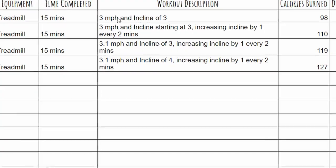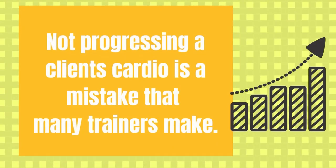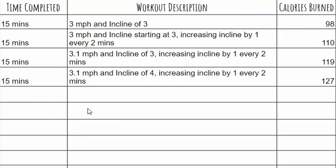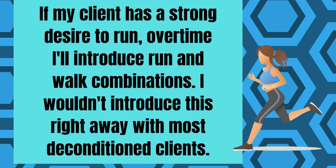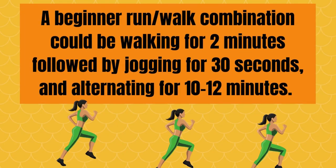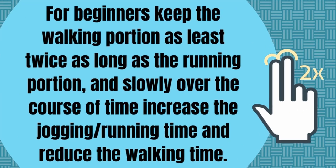Not progressing a client's cardio is a mistake many trainers make. Over time, I increase the difficulty — raising the speed a little one week, then increasing the initial incline the next. Challenge your client and keep it as interesting as you can. If a client has a strong desire to run, I'll introduce run-walk combinations over time — though I wouldn't introduce this right away with most deconditioned clients. A beginner run-walk combination could be walking for two minutes followed by jogging for 30 seconds, alternating for 10 to 12 minutes. Keep the walking portion at least twice as long as the running portion, then slowly increase the jogging time and reduce the walking time. If a client has no interest in running, uphill walking alone can burn quite a few calories as you gradually increase the intensity.